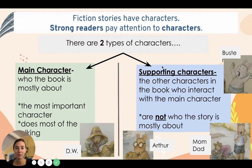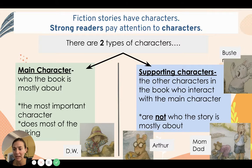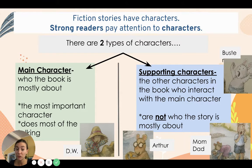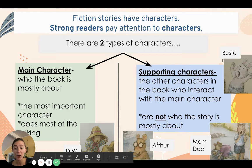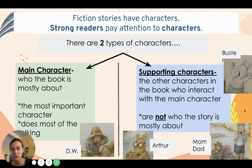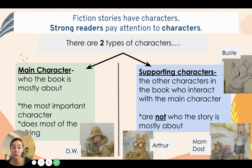The other type of character are the supporting characters. They're the other characters in the book who interact with the main character or do things with the main character. They are not who the story is mostly about. For example, in D.W. All Wet, some supporting characters are Arthur, Mom and Dad, and Buster. They're in the story, but they're not who the story is mostly about, and they do things with D.W., like they go to the beach with her.